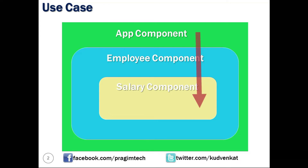Context provides a way to share values between components without having to explicitly pass that property through every level of the tree. Context is primarily used when some data needs to be accessible by many components placed at different nesting levels. We have discussed this in the case of class components.